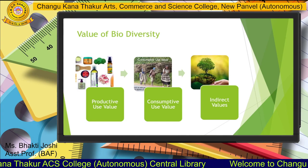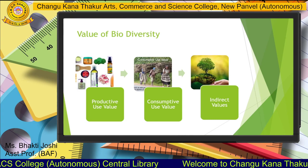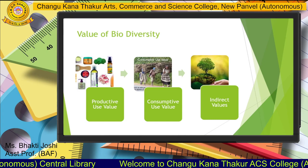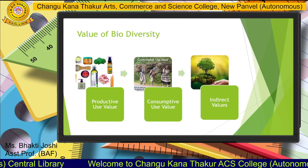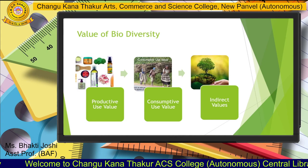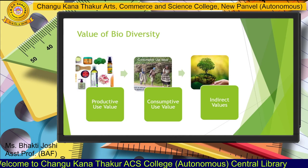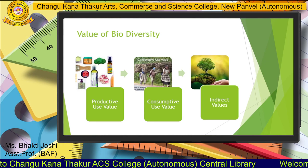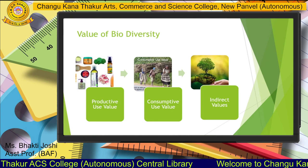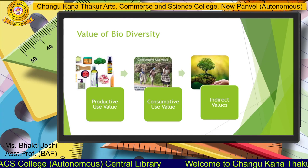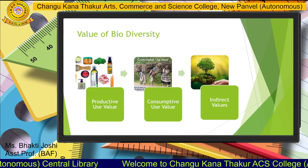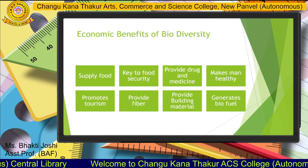The third and very important value is indirect value. This is quite complex and cannot be easily measured, because everything we get from nature is free of cost. For example, the fresh oxygen supplied by trees over a year comprises indirect value — we receive it from nature but cannot measure it in monetary terms. The value related to the functioning of ecosystems comes under indirect value of biodiversity.